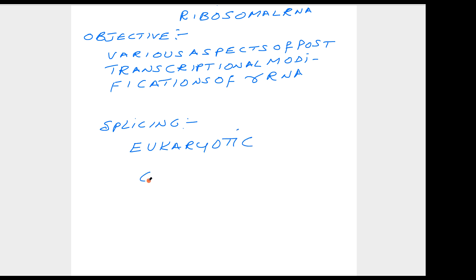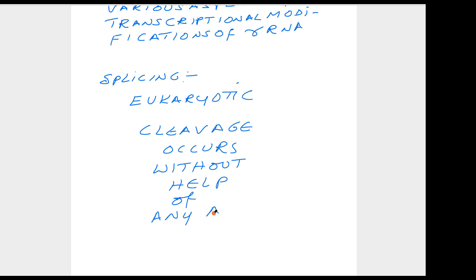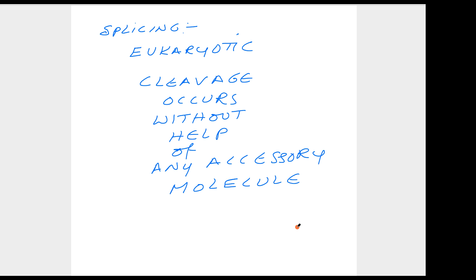Here, the ribosomal RNA cleavage — splicing is nothing but the cleavage and joining of various parts — the cleavage occurs without help of any accessory molecule. It doesn't require any other molecule. That means any other traditional protein or anything not related to ribosomal RNA is not required in this splicing process. In the messenger RNA splicing process, there are enzymes supplied from outside, additional enzymes which are required. In this particular process of ribosomal RNA post-transcriptional modification, it doesn't require any accessory molecule.